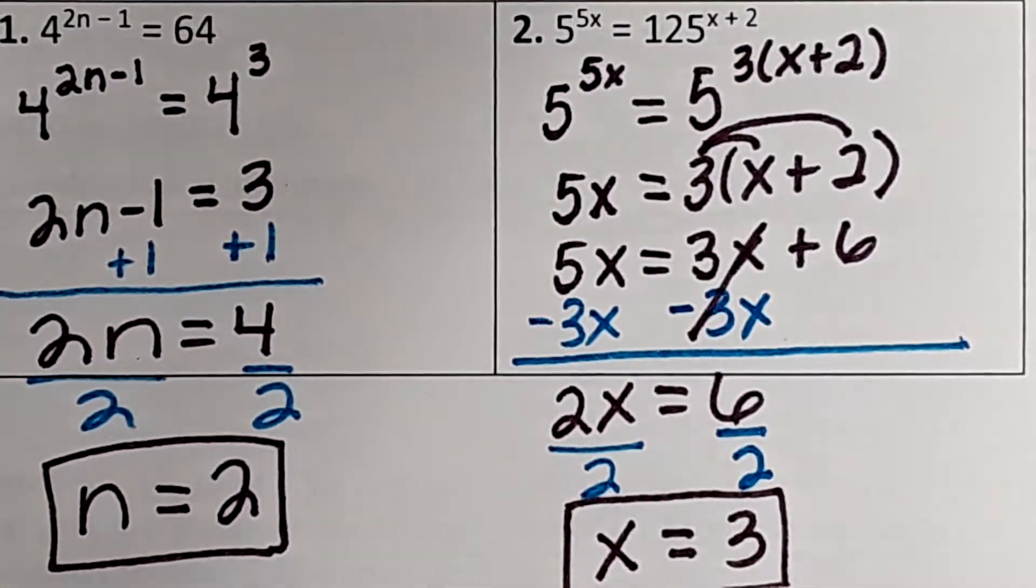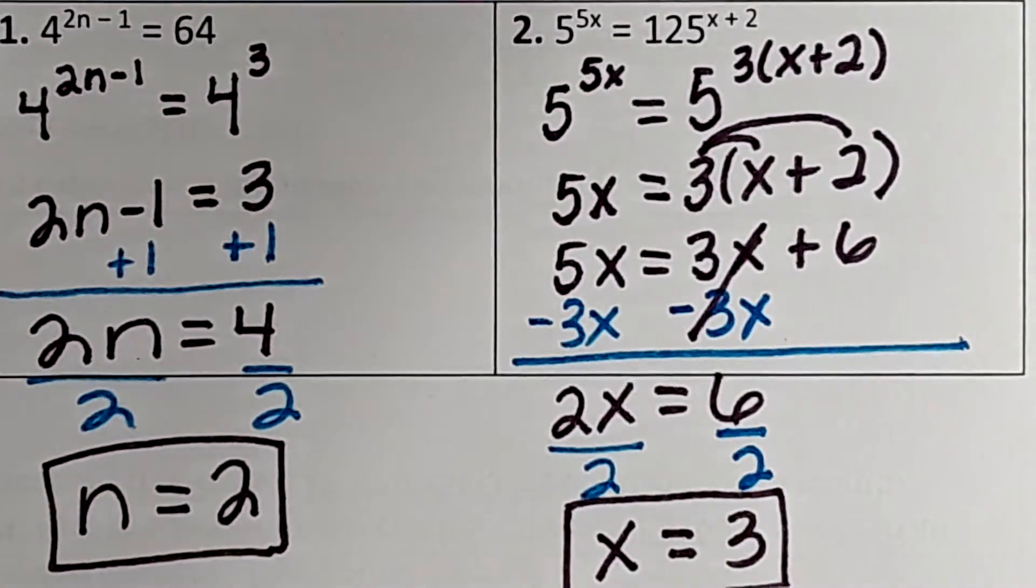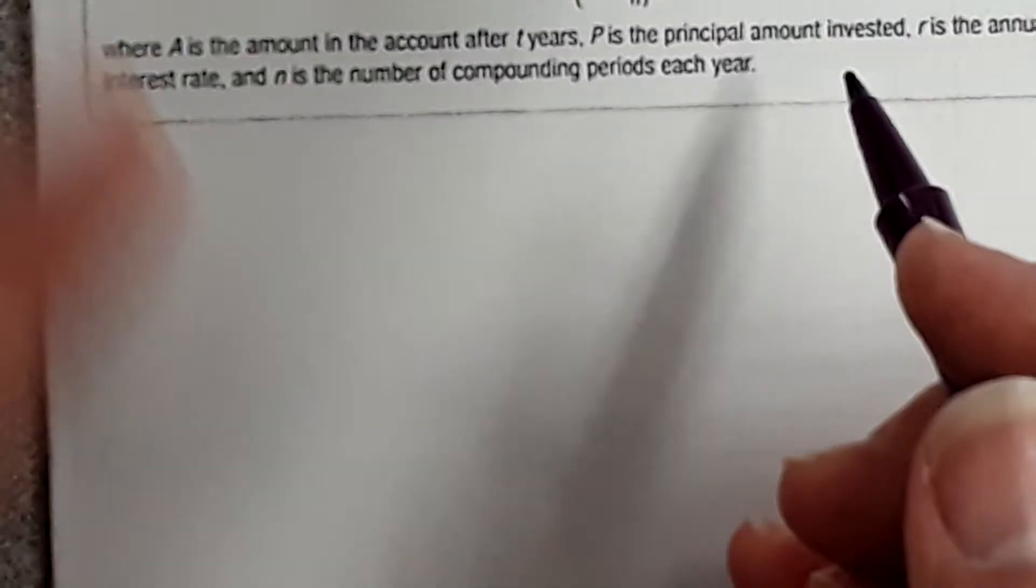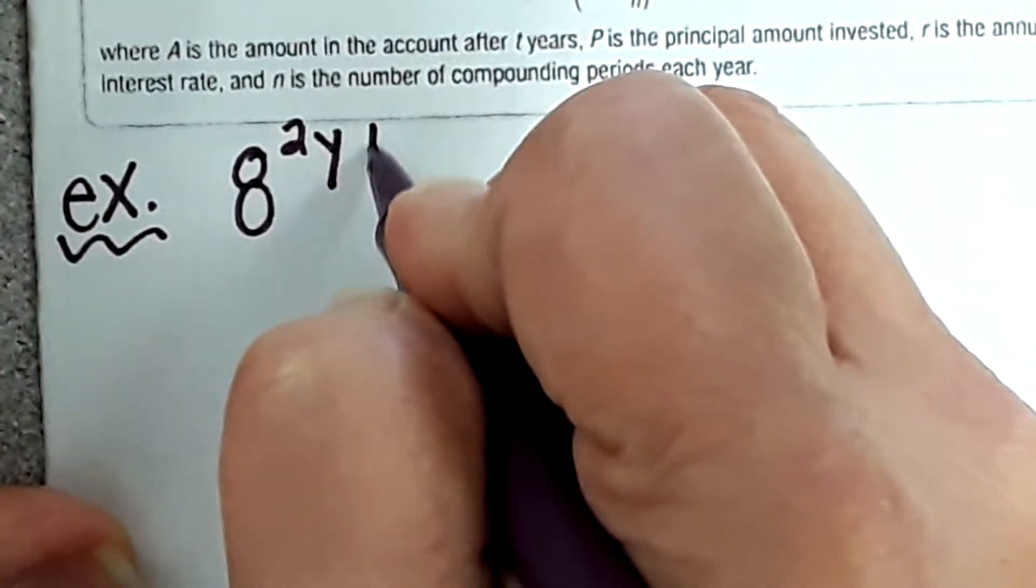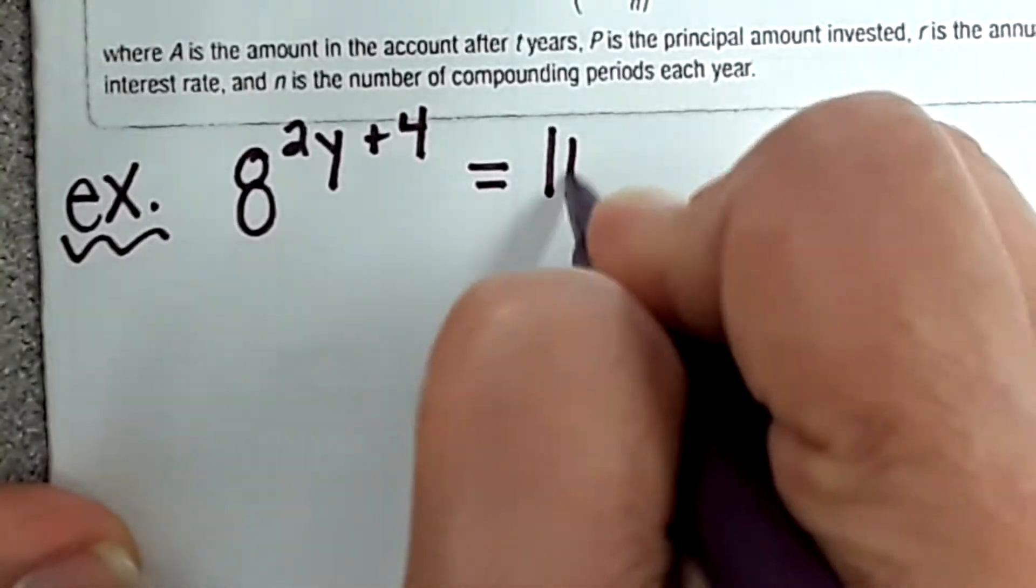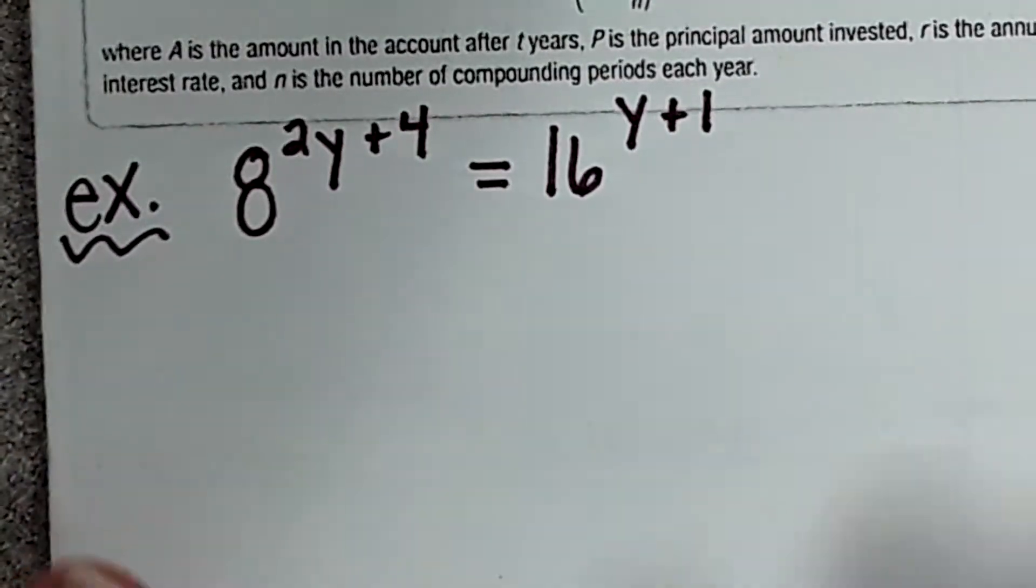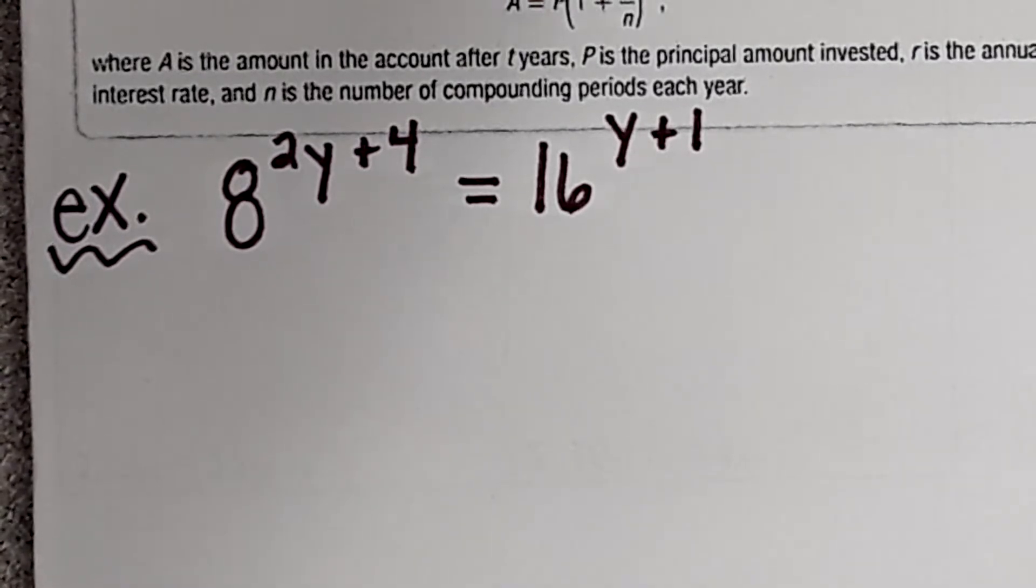Okay, so underneath where it says compound interest, we're going to do another example. This is what I was kind of talking about. You need to look at the smaller number and the bigger number. So can you rewrite 16 as 8 to a power? No, because 8 to the first power is 8, 8 to the second power is 64. So we're going to have to rewrite both of them. What is a number that goes into both of them?